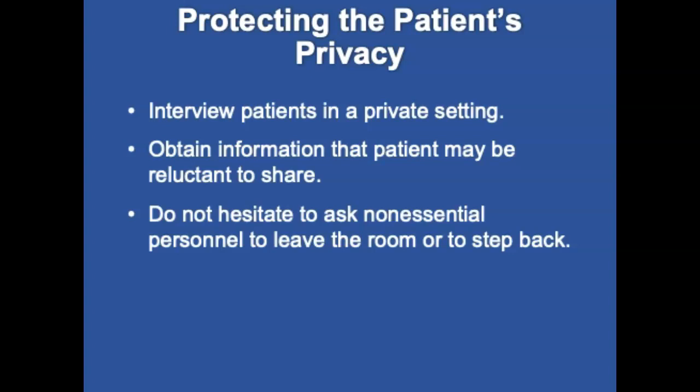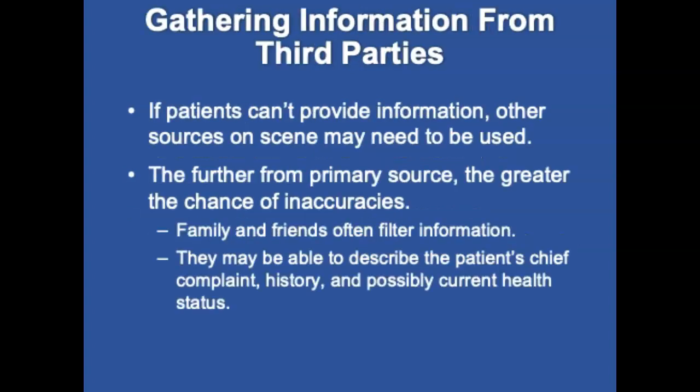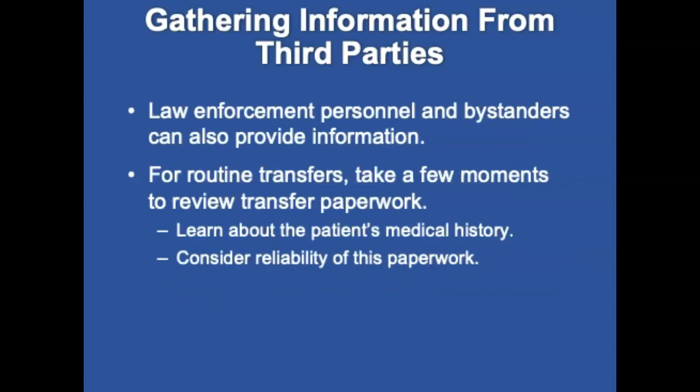Protect the patient's privacy — interview patients in a private setting and be persistent enough to obtain information the patient may be reluctant to share, but do not hesitate to ask non-essential personnel to leave the room. When gathering information from third parties, the further you go from the primary source, the greater the chance of inaccuracies. Family and friends often function as filters for information and may be able to describe the chief complaint and past history. However, you cannot reveal medical information about your patients to their family. Law enforcement personnel and bystanders can also provide information. For routine transfers, take time to review the transfer paperwork.